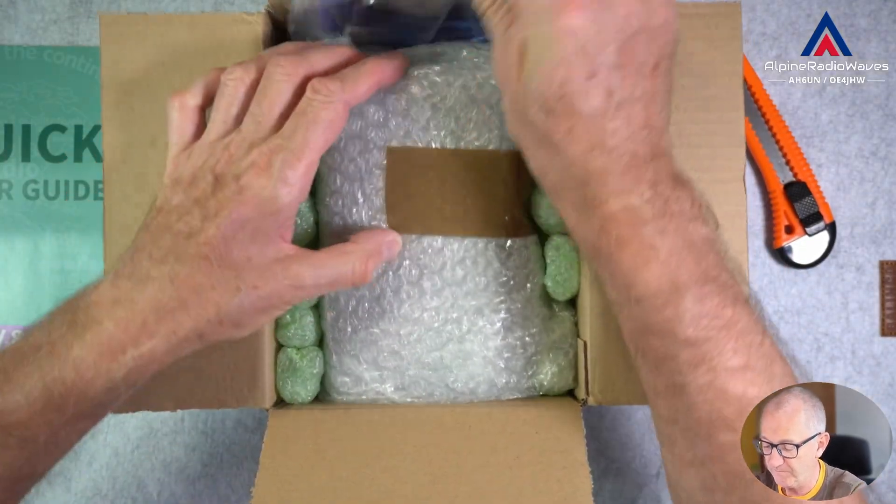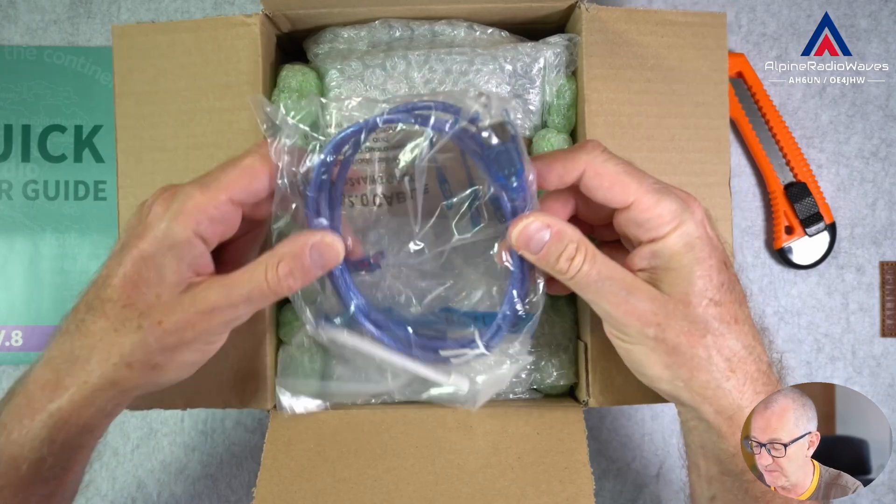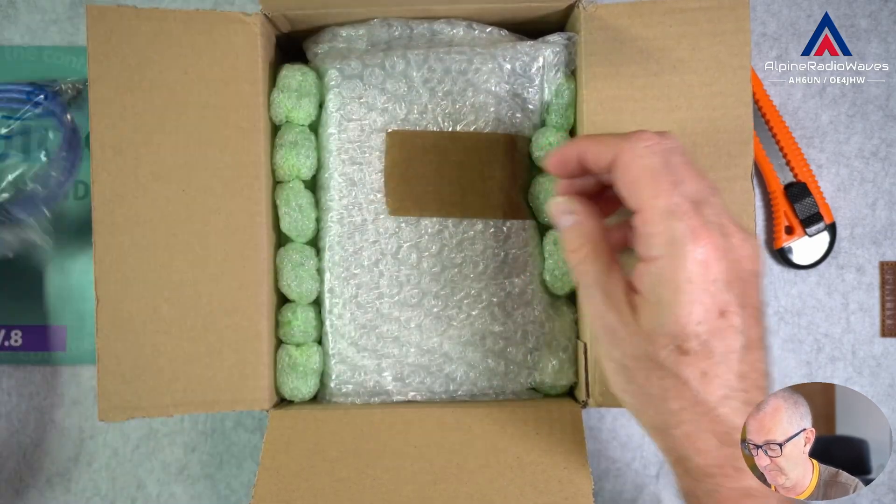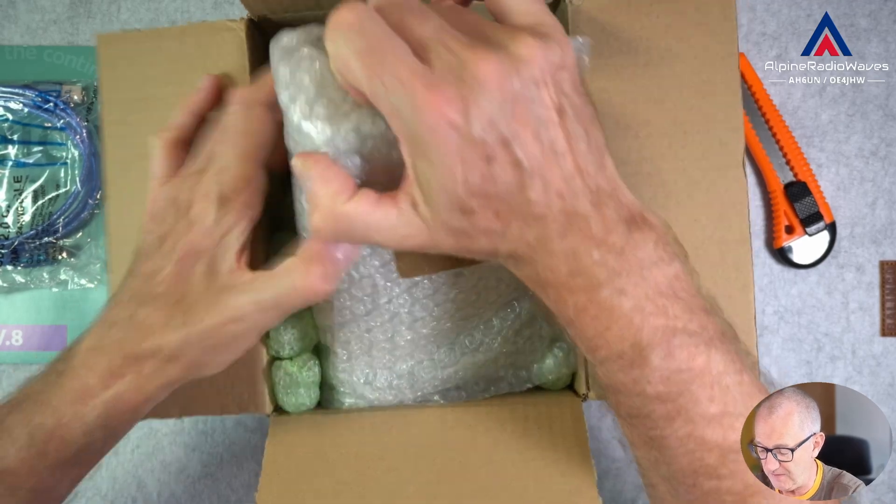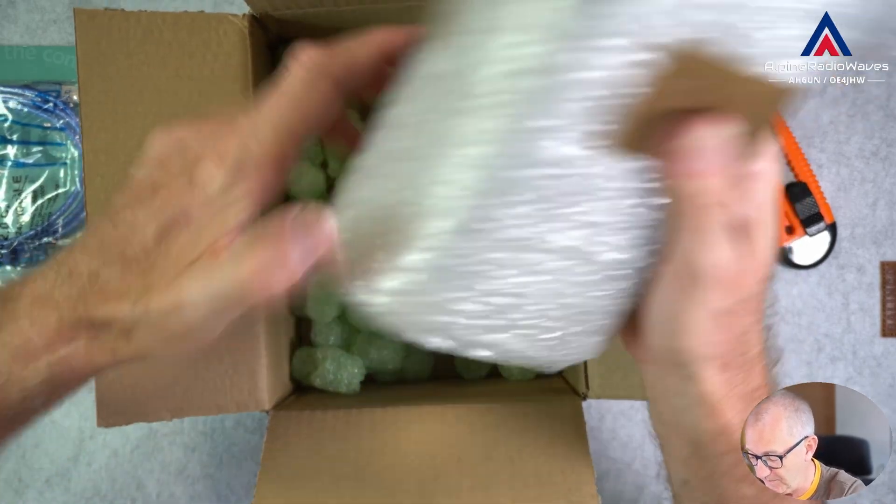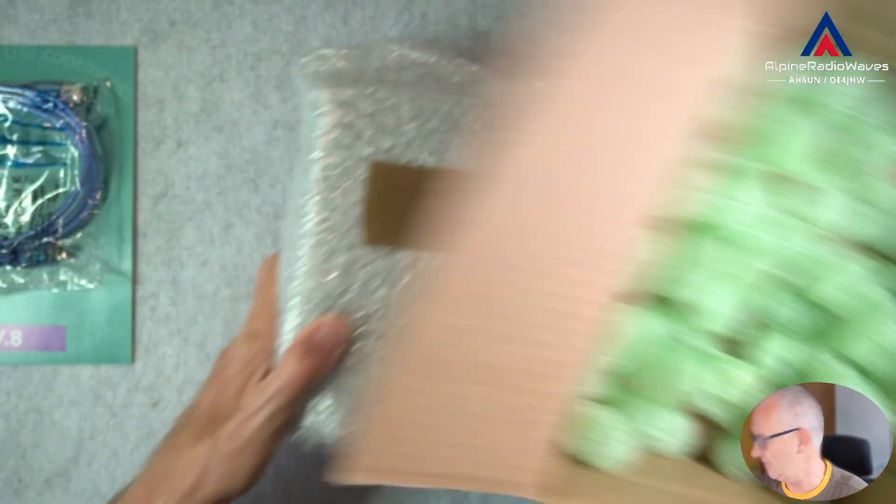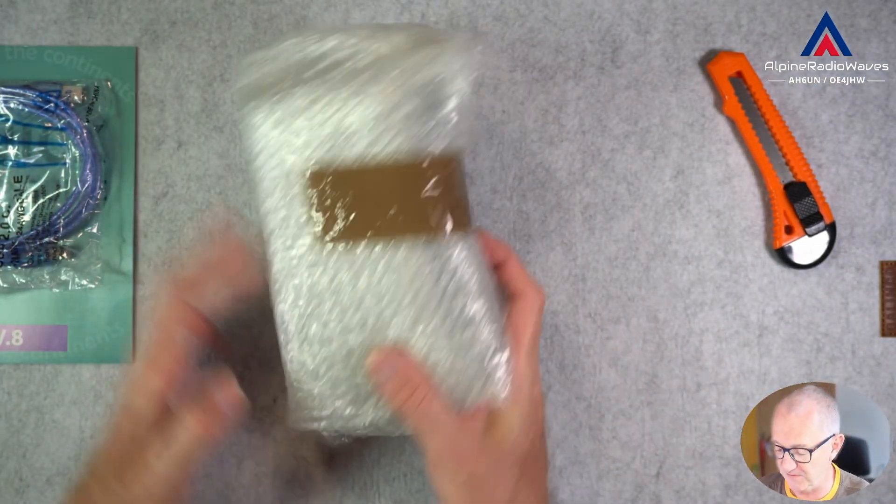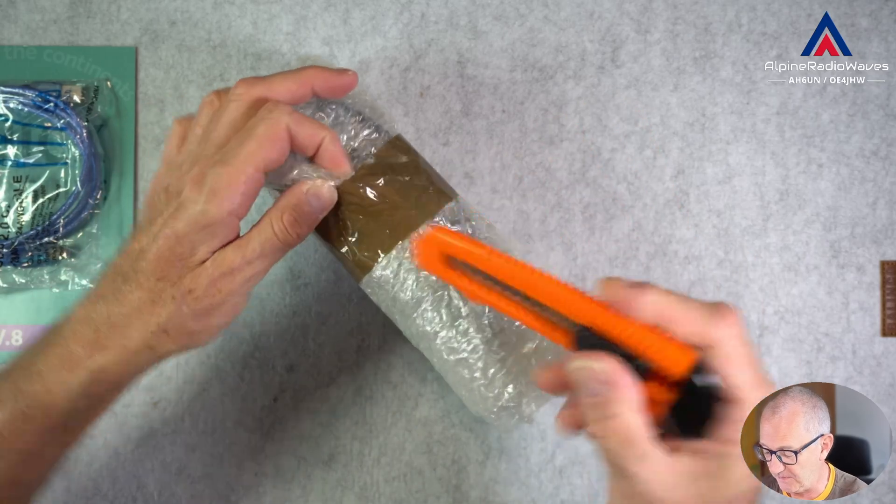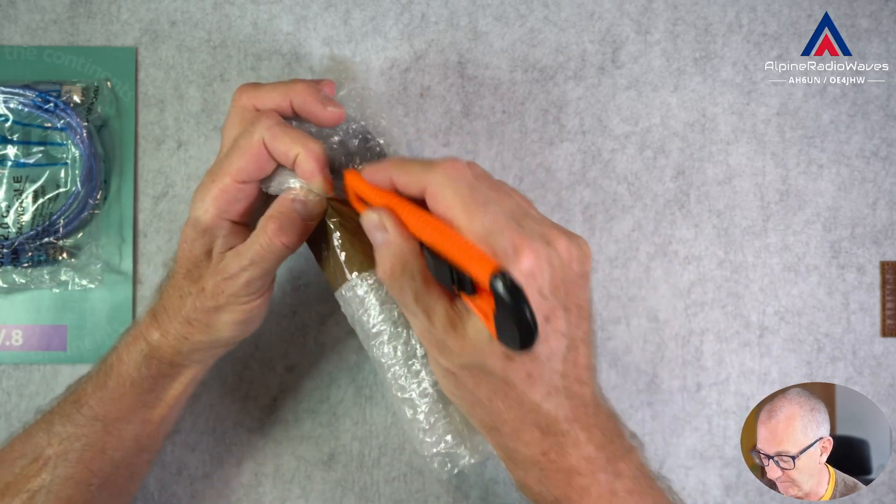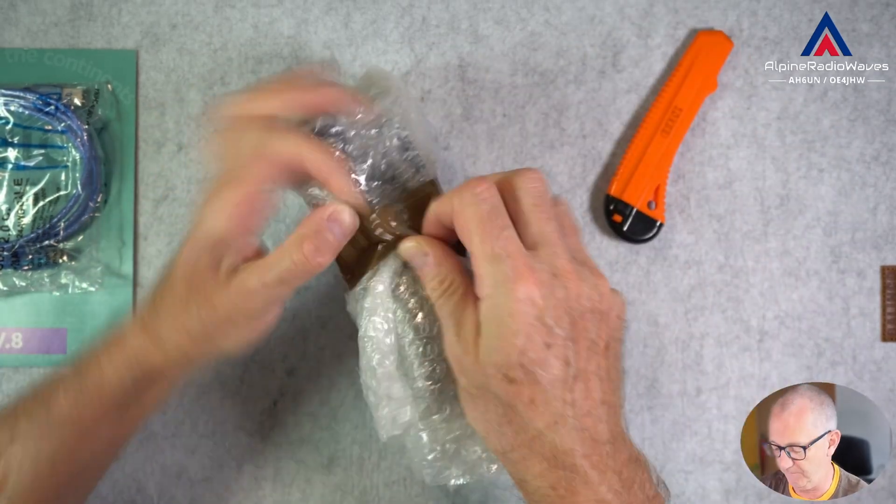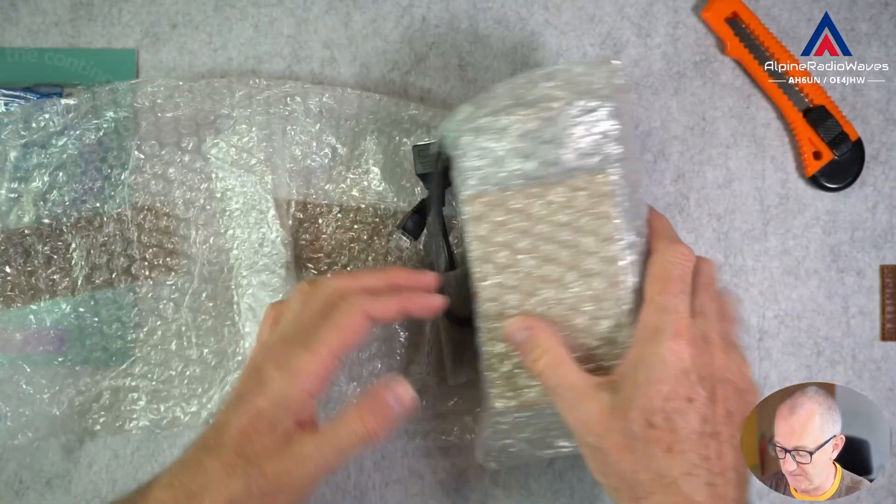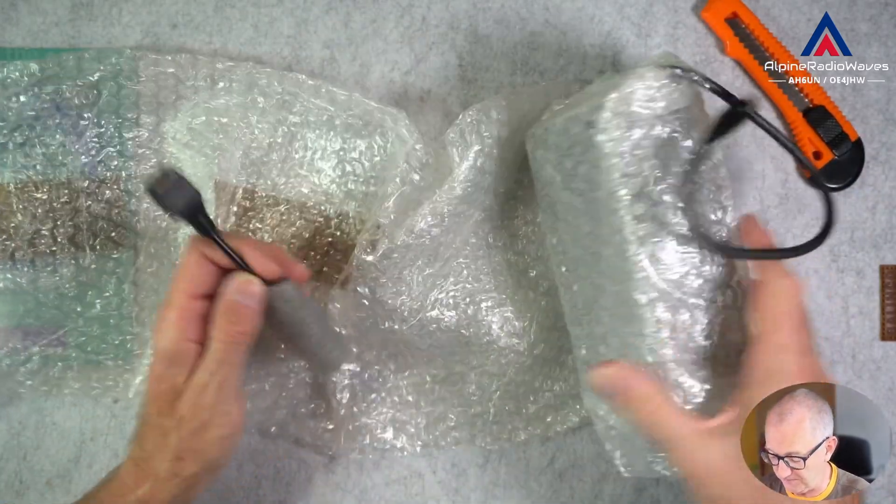And here is a USB cable and some packing material. Oops! Let me put this to the side and let's have a look what's inside this plastic wrap.